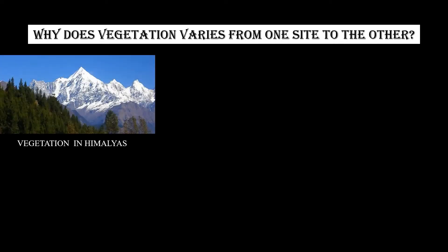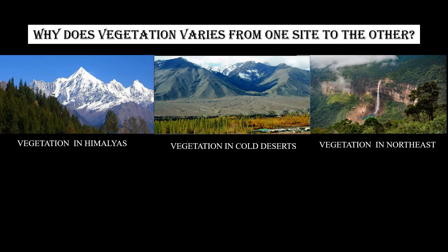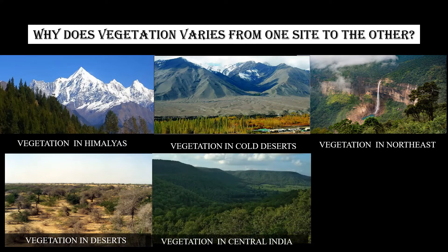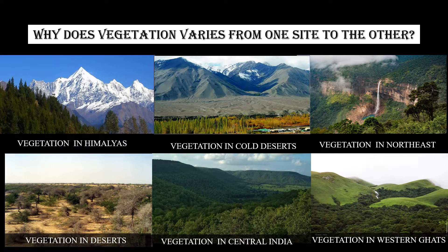Let's start this lecture with a question: why does vegetation vary from one place to another? As you move from one place to another, you might have noticed that the vegetation of a particular place varies from that of another place. This is due to the various factors that influence the conditions of a particular site. Looking at India, we have vegetation in the Himalayas, cold deserts, northeast India, deserts, central India, and the Western Ghats. From the image, you can clearly see the different types of vegetation that vary from place to place — the vegetation in the Western Ghats is completely different from that of the cold deserts.